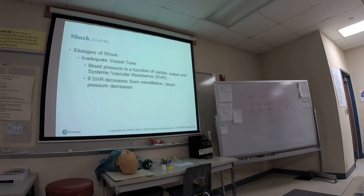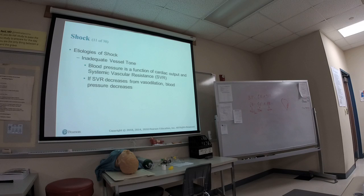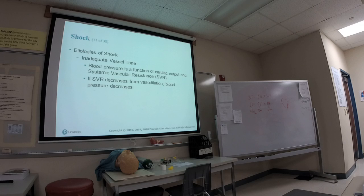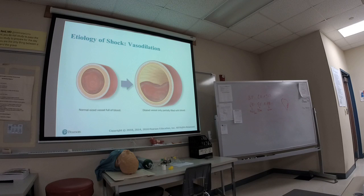In distributive shock, there's a problem with vascular tone — systemic vascular resistance. When vessels dilate, the pressure drops. Picture a normal vessel: fluid exerts pressure on the vessel walls. When the vessel dilates with no change in volume, the pressure decreases — that's the fundamental problem with distributive shock.